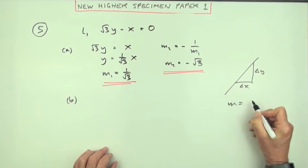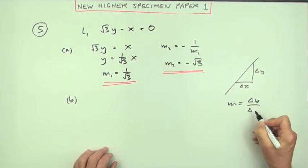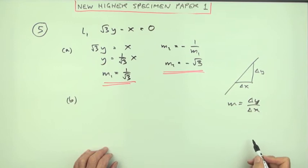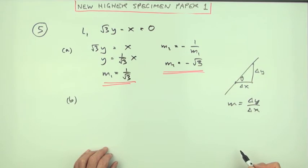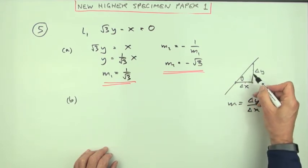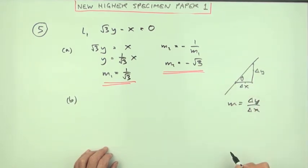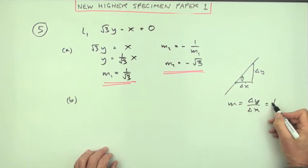To get its gradient, you want the distance up over the distance along between any two points in the line. But the angle that line makes, those two sides define the tangent of that, so the gradient is also the tangent of the angle.